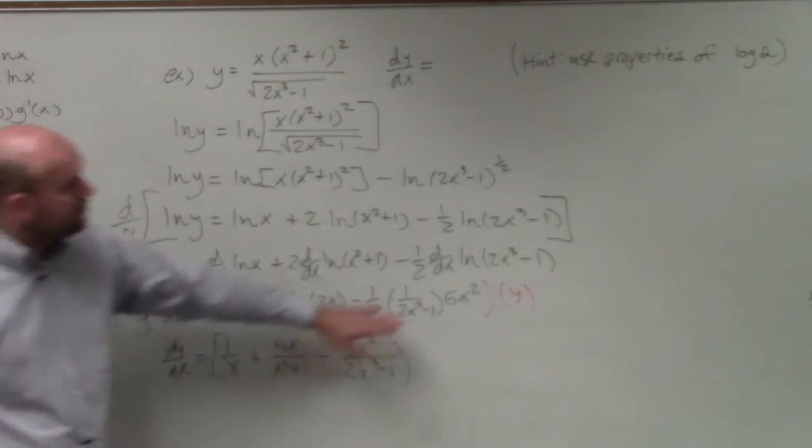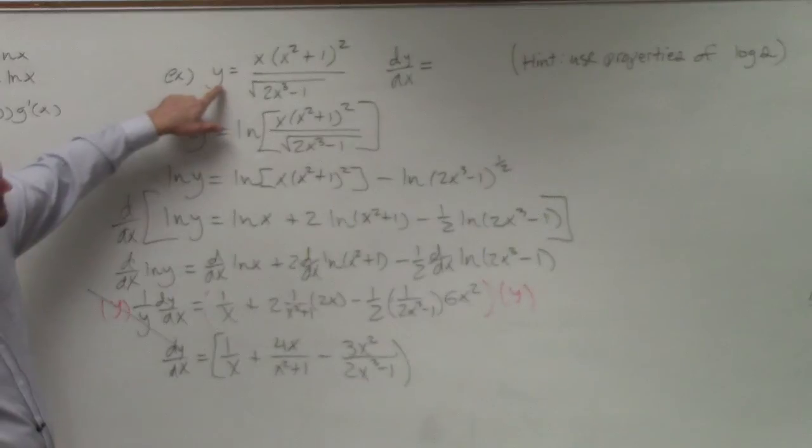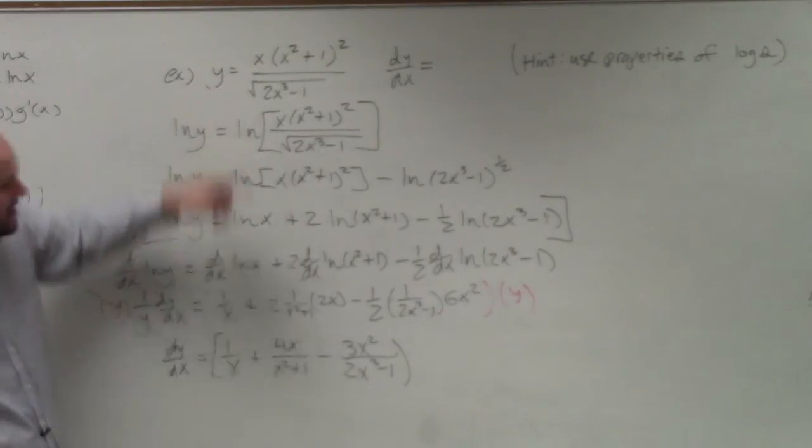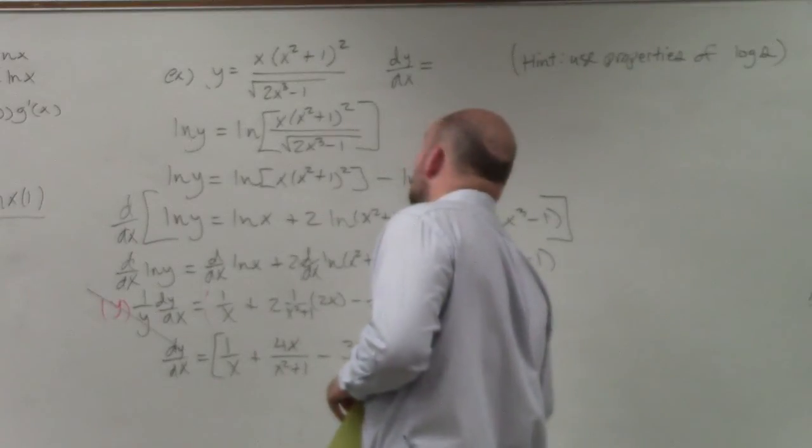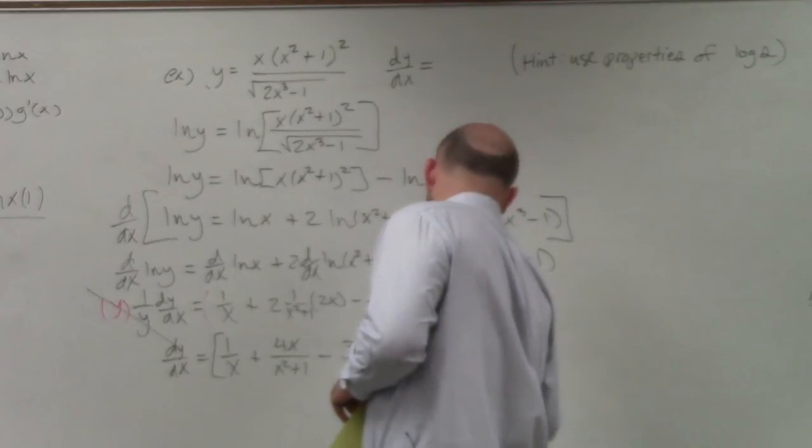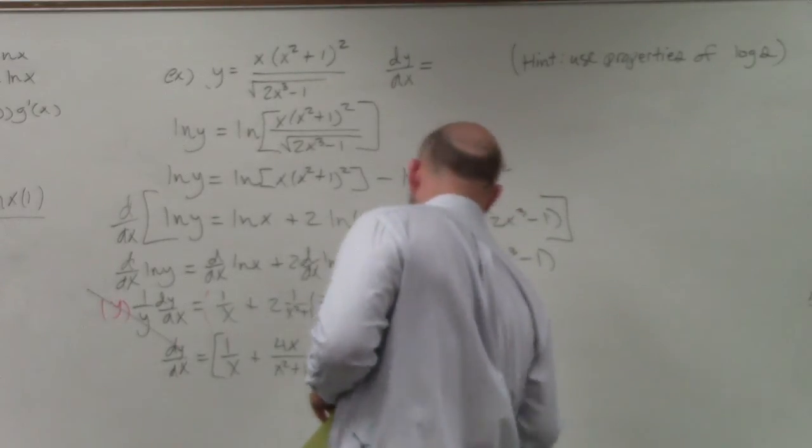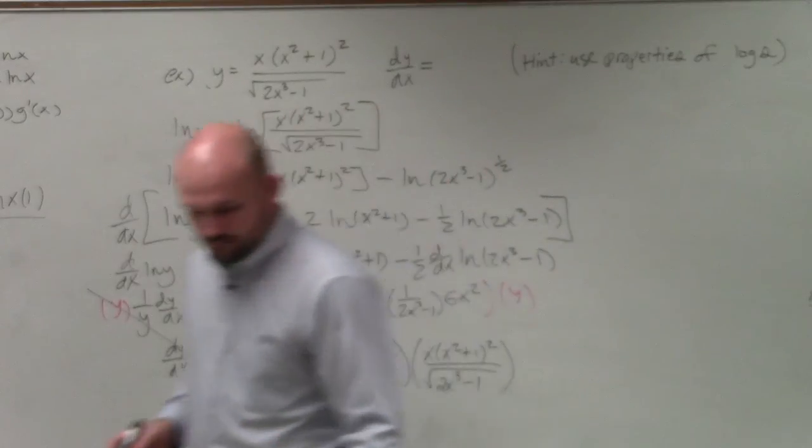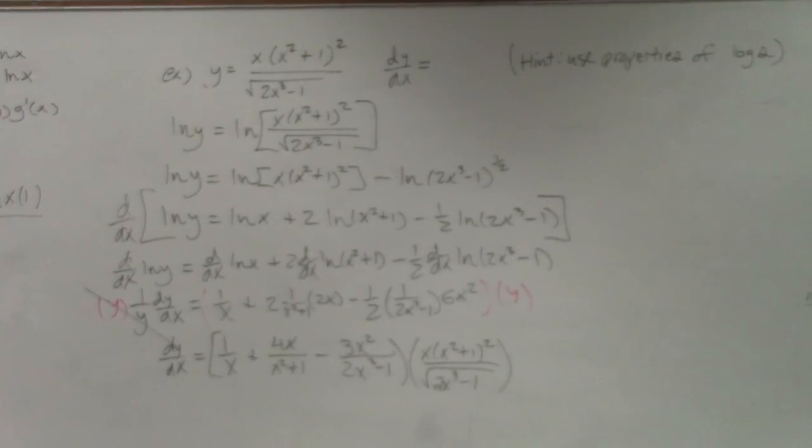And then we're multiplying it by y. Those y's divide out. We're multiplying it by y, but we know that y is equal to this, to our original equation. So, therefore, I can just re-substitute in our value of y, which would be x times x squared plus 1 squared over the square root of 2x cubed minus 1. Now, if you want to use... that's it by y.